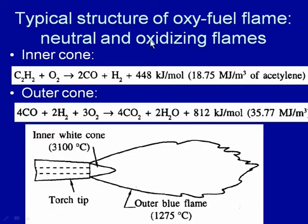Depending on the oxygen-to-fuel gas ratio, three different types of flames can be obtained: a neutral flame when oxygen and acetylene ratio is approximately equal; an oxidizing flame when oxygen ratio is greater than fuel gas; and a carburizing flame when the fuel gas to oxygen ratio is greater than one.